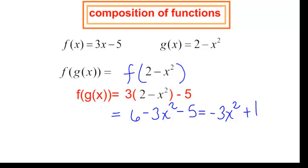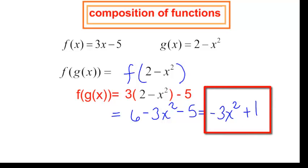So f at g of x is just negative 3x squared plus 1. And if I don't tell you what x is, that is as far as I can go. I am done.